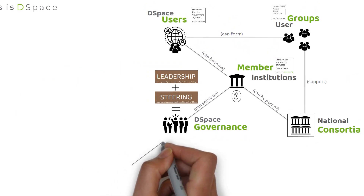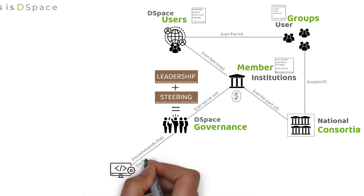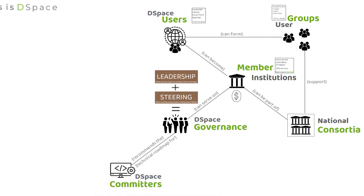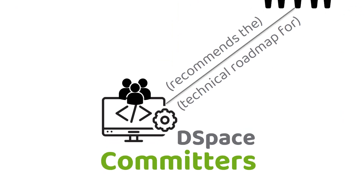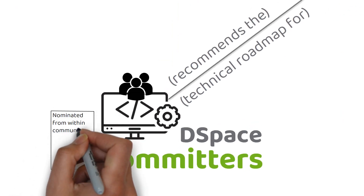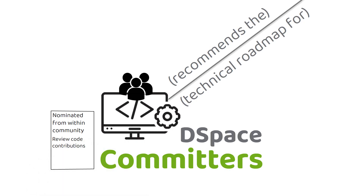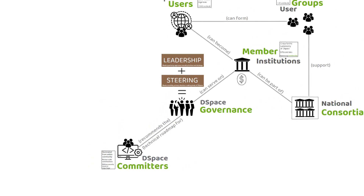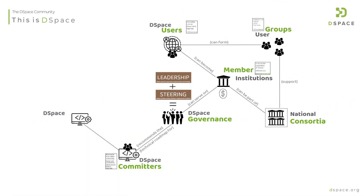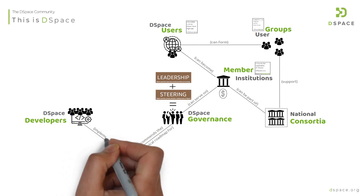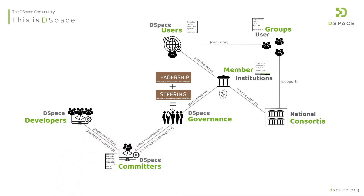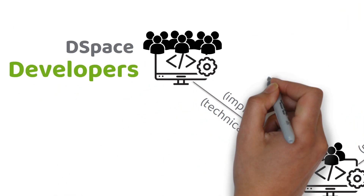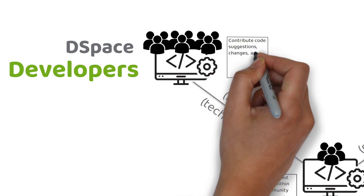The volunteer team that manages the code within DSpace and recommends the technical roadmap to DSpace governance is called the DSpace Committers. This small group of highly skilled professionals is nominated from within the community. They review community code contributions and address security issues or major bugs. They thereby review the work that is done by the DSpace developers community. Developers are volunteers from all over the world that implement the technical roadmap set by DSpace governance and the committers. They do so by contributing code suggestions, changes and new software features.